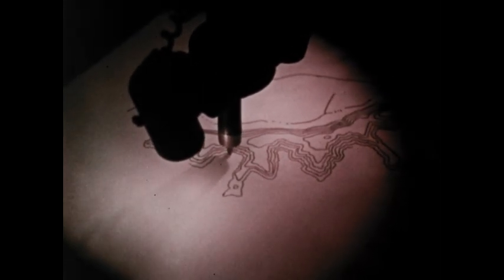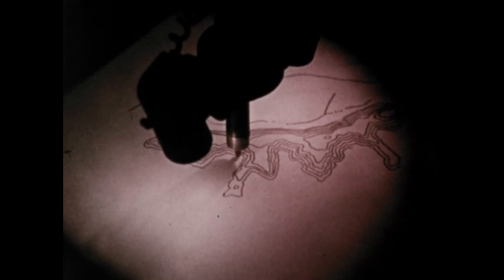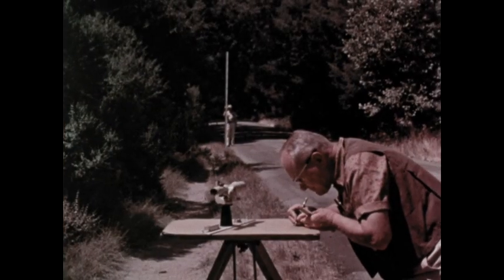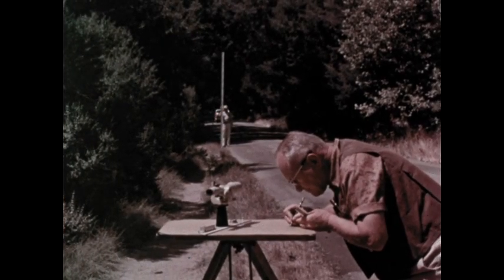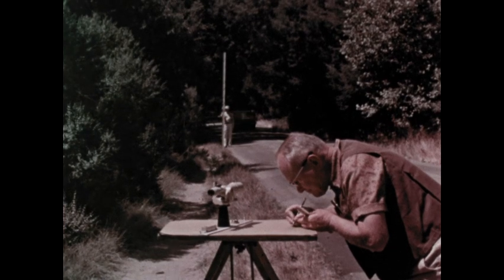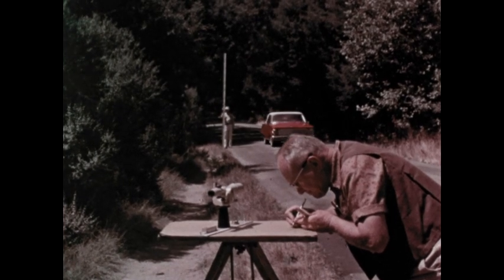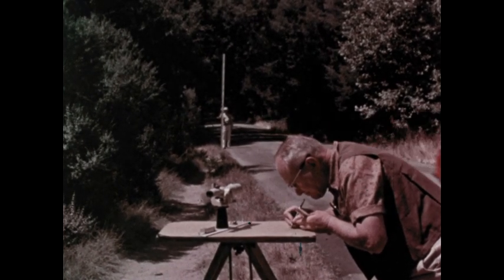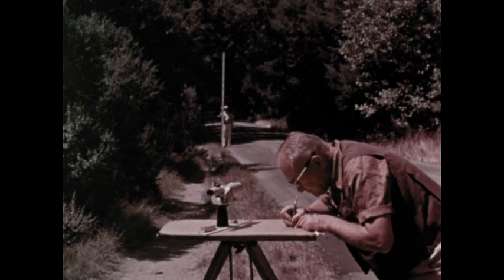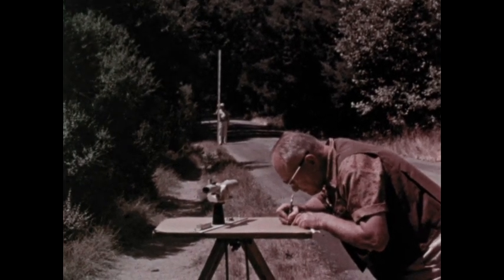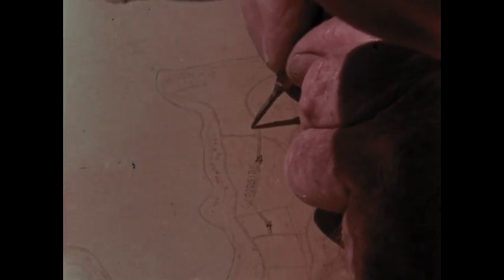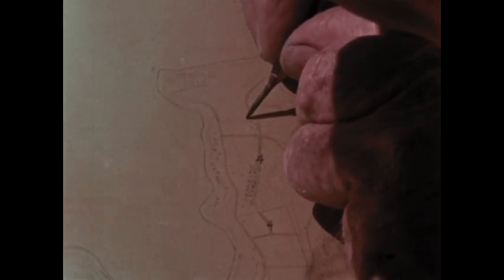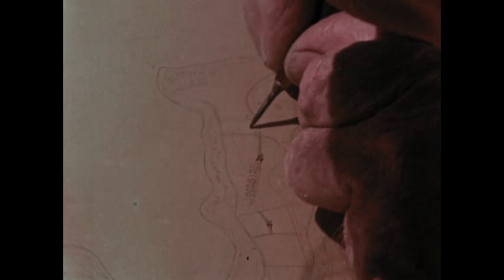When all the information this operator can get from the photographs has been mapped, field engineers must go back to pick up any missing information. Here, for example, the road being mapped was hidden from the aerial camera by trees. The field engineers also classify roads and buildings and add the man-given names of things that no camera can record.